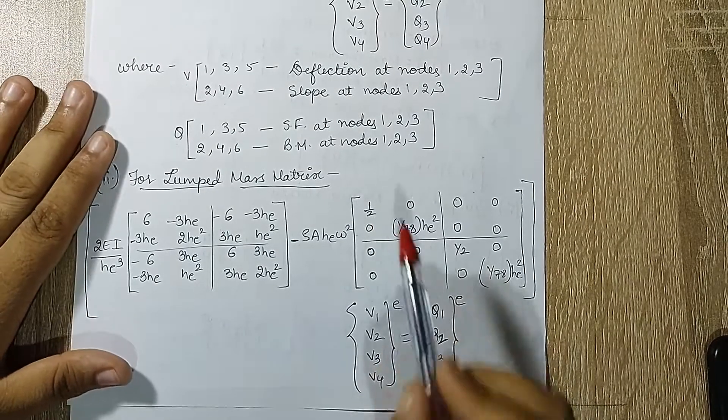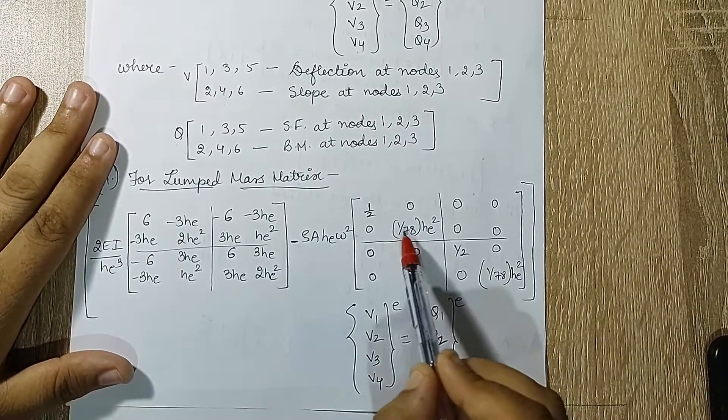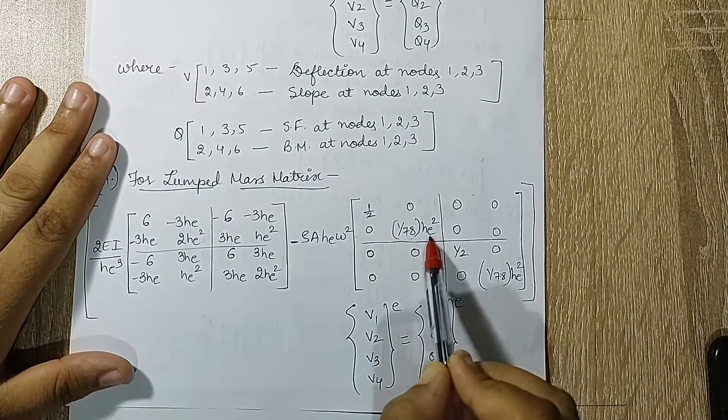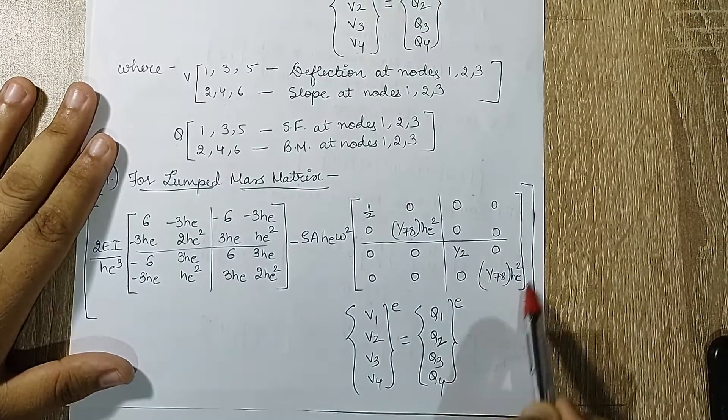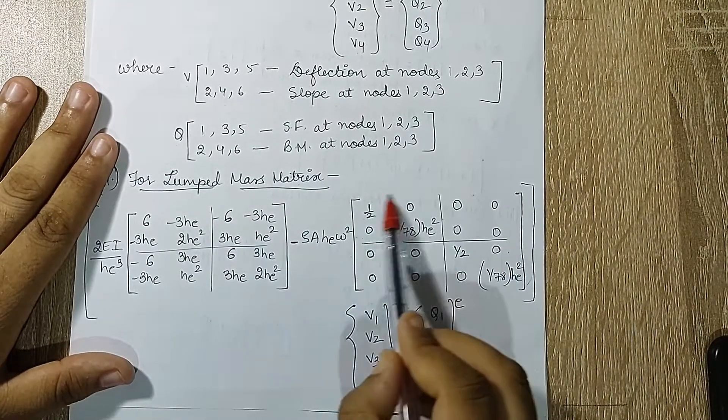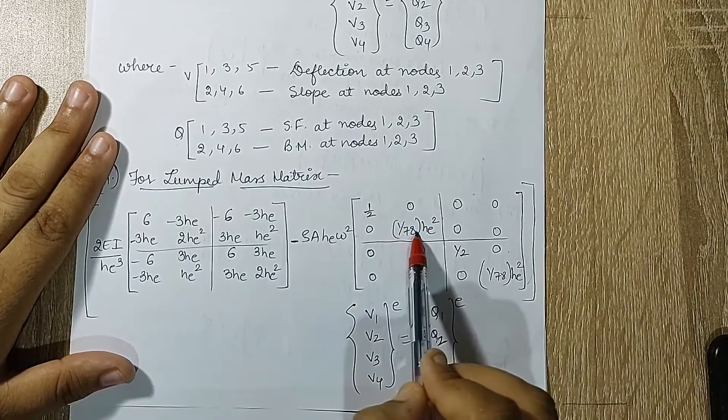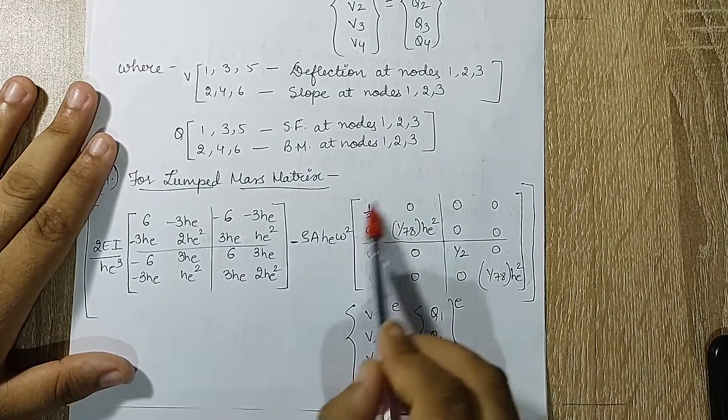Here we have this matrix, the same. I think I will not repeat this portion. If you look carefully, this is a reason why I was telling you lumped mass is better. Because if you see, it is [1/2, 0; 0, 1/(78HE square)].